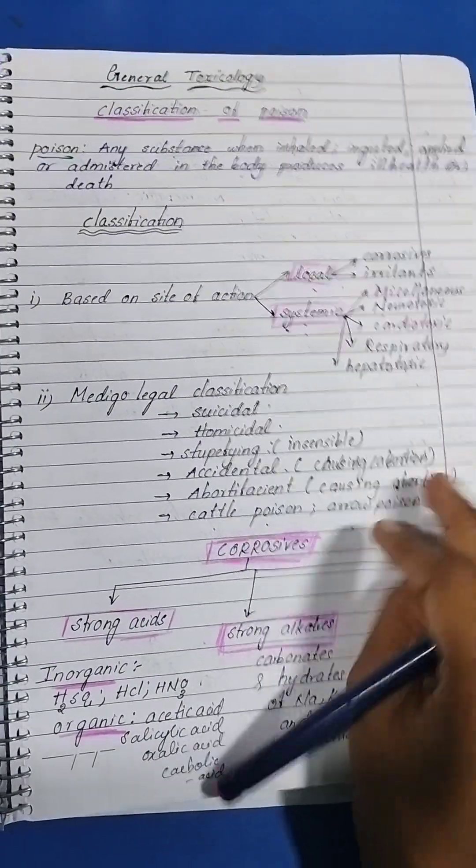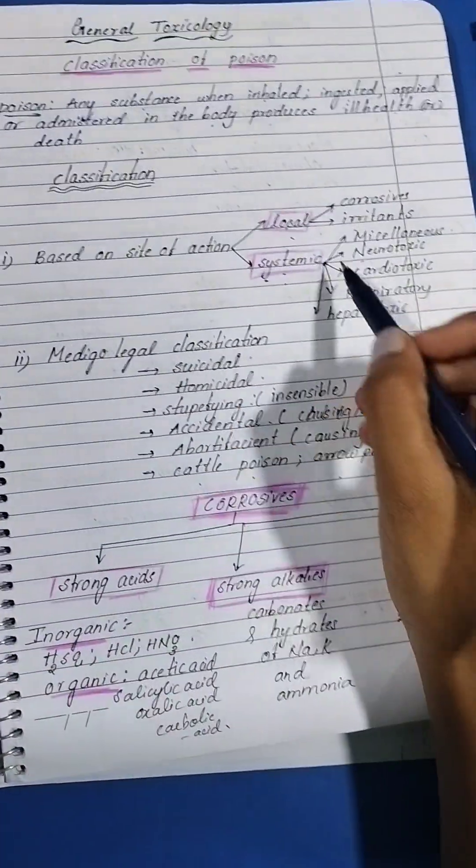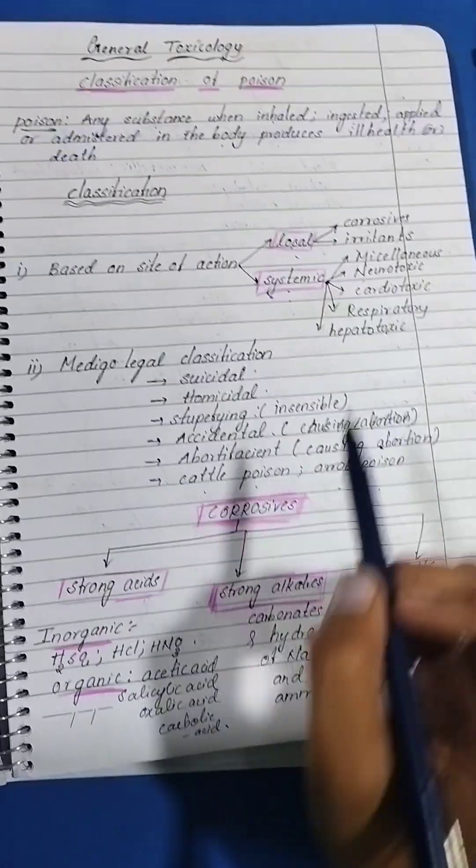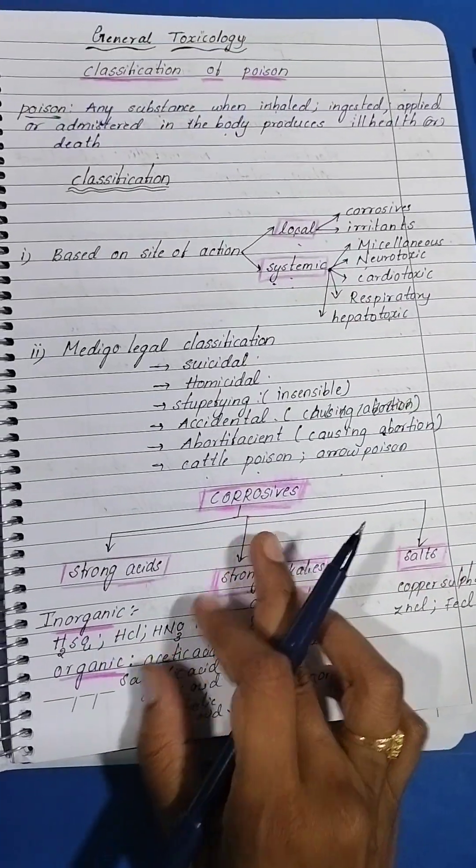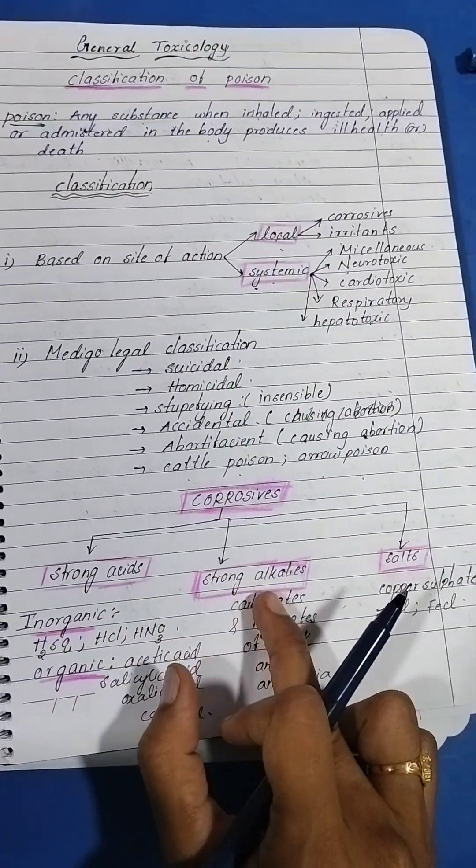Corrosives are again classified into strong acids, strong alkalis, and salts. In strong acids we have inorganic and organic.